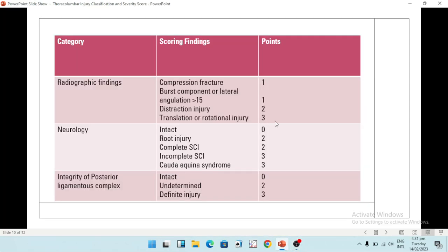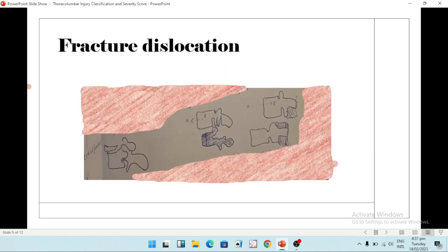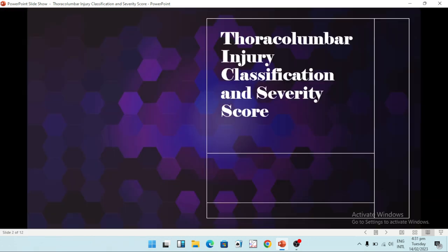Hello guys and welcome to my channel. Today we're going to be talking about the thoracolumbar injury classification and severity score. If a person has some kind of injury, they have a history of fall from stairs, ceiling, roof, terrace, or there could be a road traffic accident.